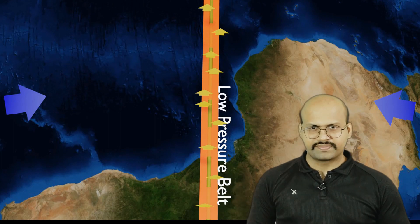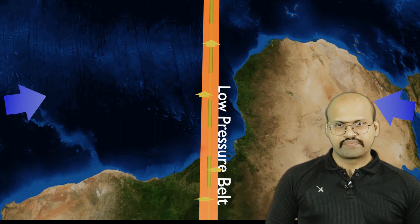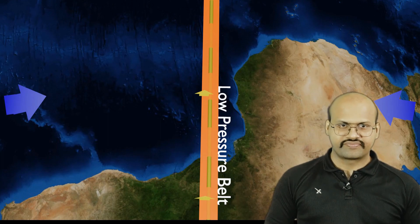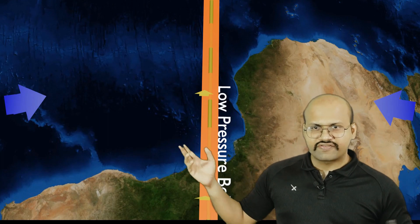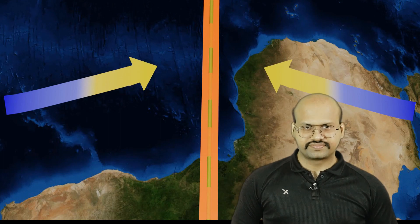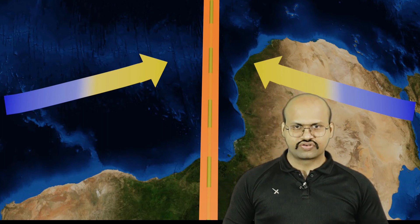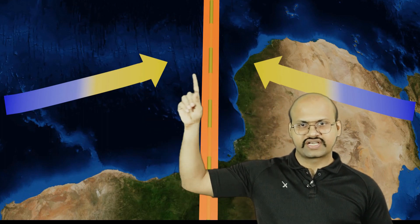Because this air rises up, a low pressure region is created on the surface due to the depletion of air. In order to fill this depletion, air from both sides starts to move towards this low pressure region created at the equator. As these winds move toward the low pressure region, they get heated because they are entering the equatorial region which has a lot of heat. Both wind currents are getting heated because of the sun.